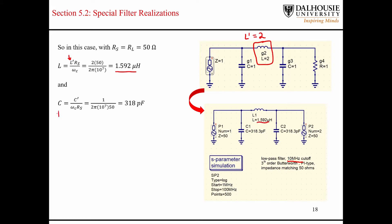You do something similar with the capacitor, where C prime is going to be equal to one — that is the normalized capacitance in the low-pass filter prototype. So this is an example of the impedance transformations for inductors and capacitors when converting a normalized low-pass filter prototype into an actual realizable low-pass filter implementation.